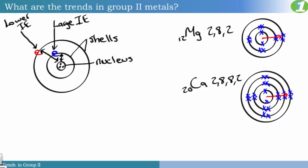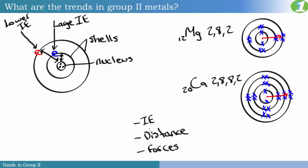A point to note: if you look at magnesium, it has three electron shells, so magnesium belongs to period 3. The number of shells tells the period, and the valence electrons tell the group. So magnesium belongs to group 2 and period 3 — we can pinpoint its exact position in the periodic table. Calcium, having four shells, belongs to period 4. Its two valence electrons on the outer shell place it in group 2. So again, ionization energy, distance, and forces of attraction are the three items we use to discuss and explain the reactivity of group 2 elements.